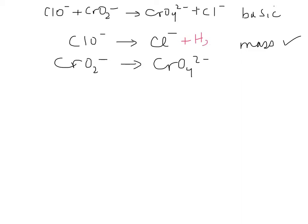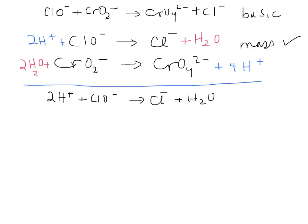We're going to add water to the right hand side and two waters to the left hand side. In the next step, we're going to balance the hydrogen. So it'll be 2H⁺ to the left hand side and then the second one will be 4H⁺ to the right hand side. So let's go ahead and summarize that. We've got 2H⁺ plus ClO⁻ forms Cl⁻ plus H₂O and then two waters plus CrO₂⁻ forms CrO₄²⁻ plus 4H⁺. So we've got the hydrogen in there and the oxygen.